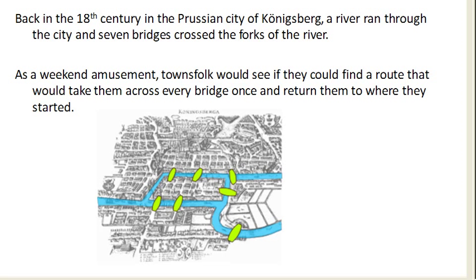For another example of how graphs come into things, consider this. Back in the 18th century, there was a Prussian city called Königsberg, where a river ran through the city. The river forks, and there were seven bridges that crossed the various forks of the river.